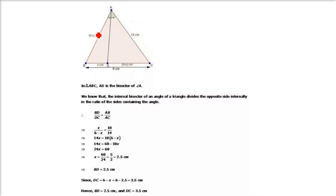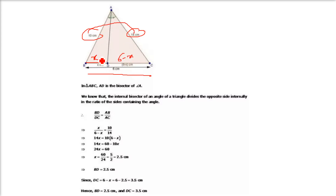Next sub-part: AB is 10, AC is 14, and the whole BC is 6. If we assume BD as X, then DC is 6 minus X. So 10 by 14 equals X by (6 minus X), giving 14X equals 60 minus 10X, so X equals 2.5. Therefore BD is 2.5 and DC is 6 minus 2.5, which is 3.5.